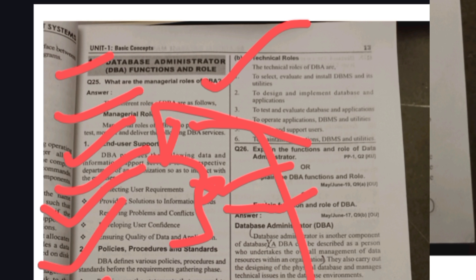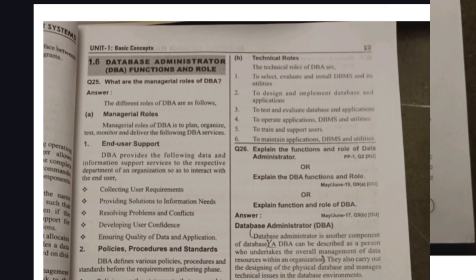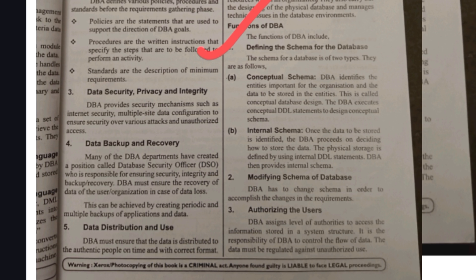The DBA also handles Data Distribution and Use — distributing data to authorized people in the correct format. For example, if you request an image, he should provide that image. His Technical Roles include designing, implementing, and testing the database application, and checking whether the database is in correct format.